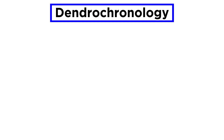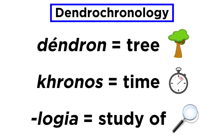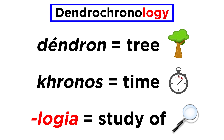The first topic we will cover in this endeavor over the next handful of tutorials is dendrochronology. Dendrochronology is a term derived from the Greek words for tree, or dendron, time, or chronos, and the suffix logia, which translates in English to mean the science of, or study of.